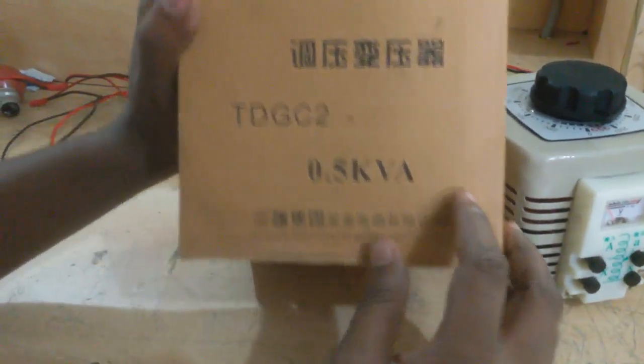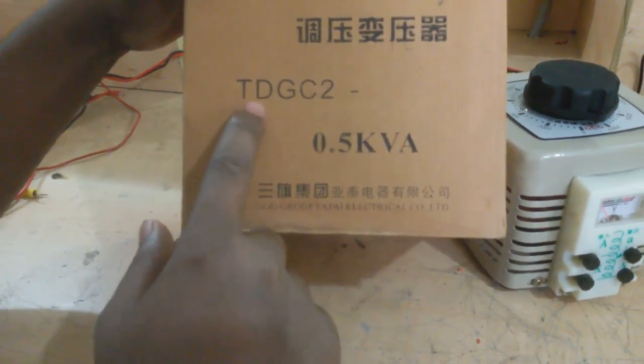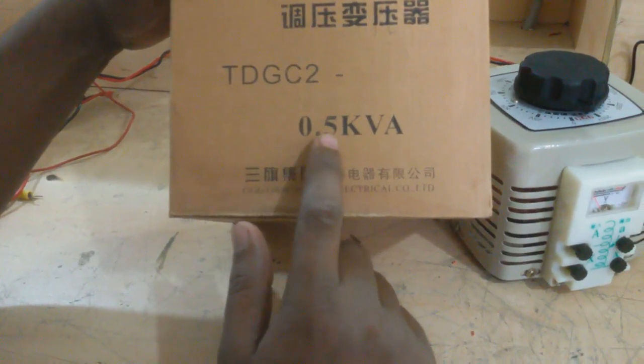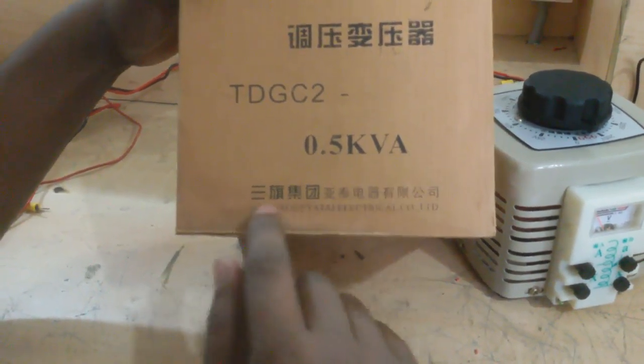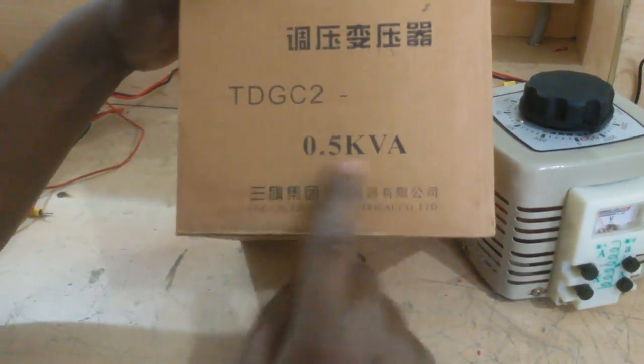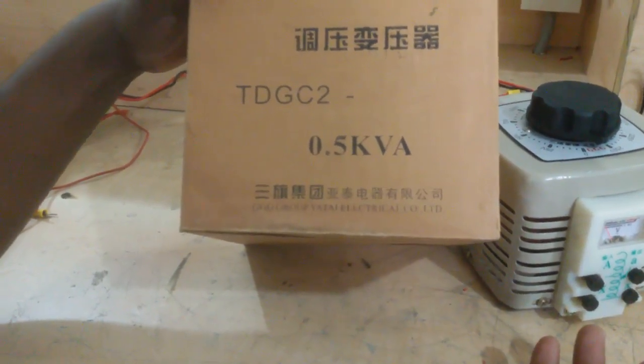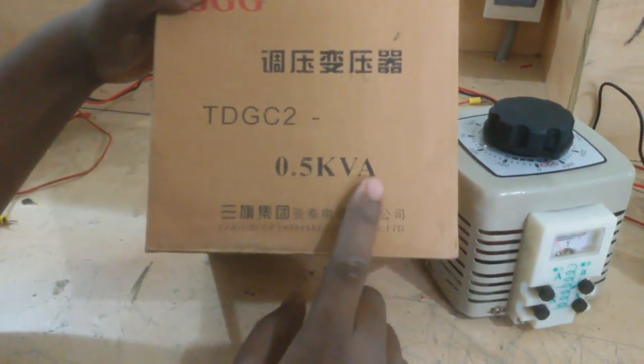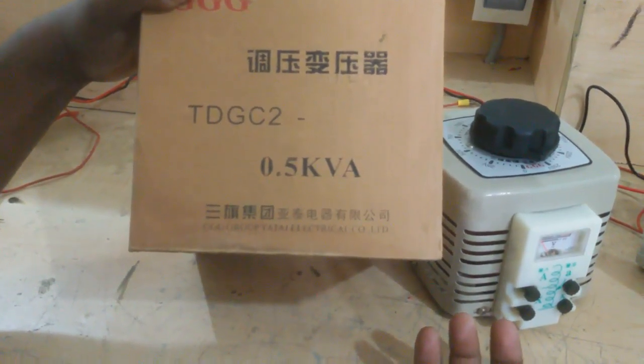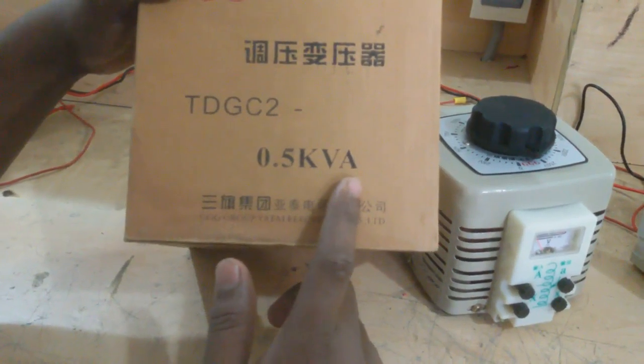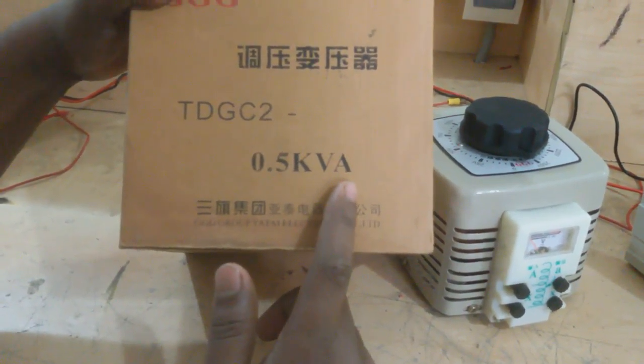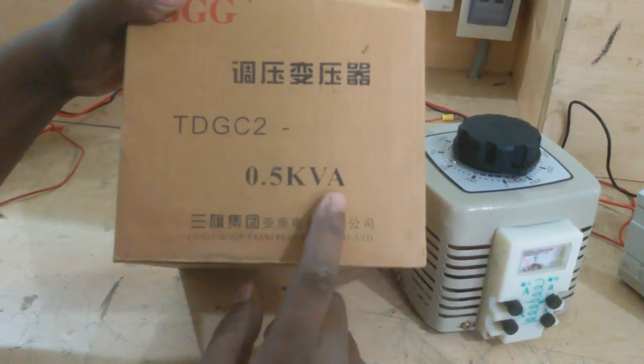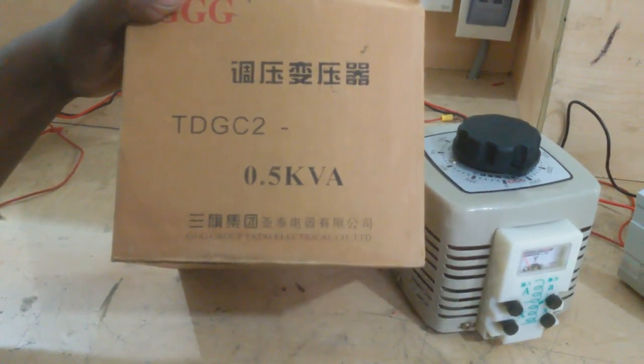You see here, this is a model. This is model TDGC2 and 0.5 kVA. There's a little Chinese language. 0.5 kVA, that means it's a power 0.5 kVA. When we convert to active power, we have 0.5 kVA. Then we take here watts.